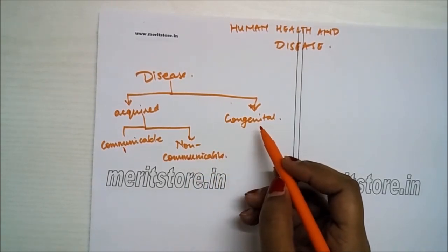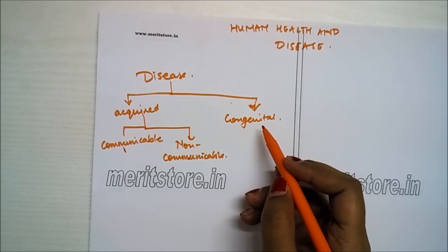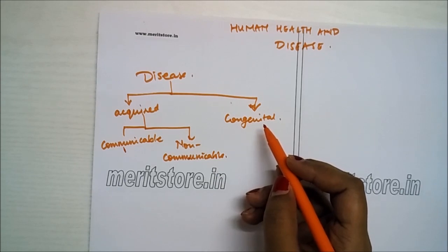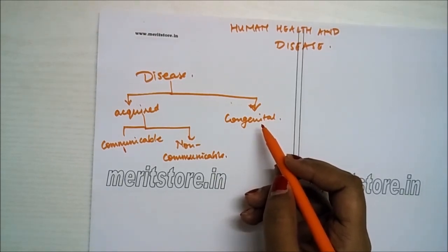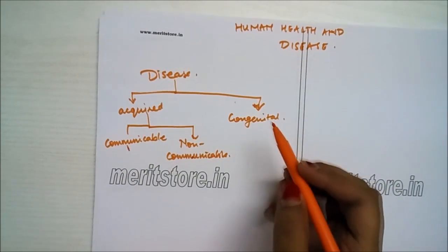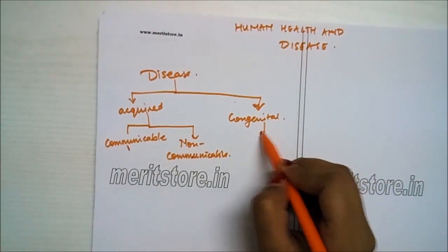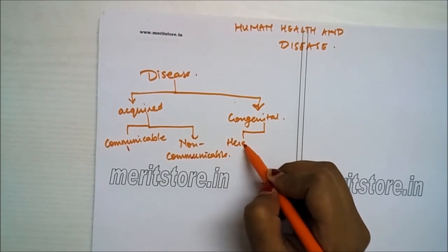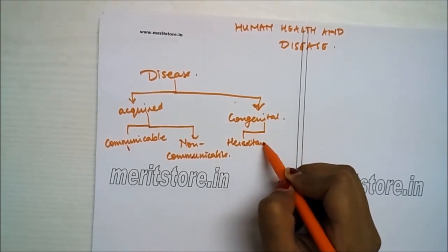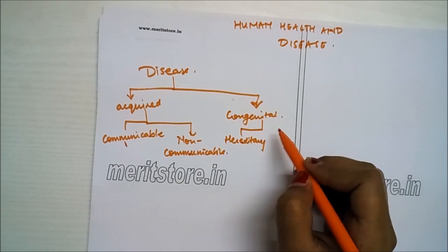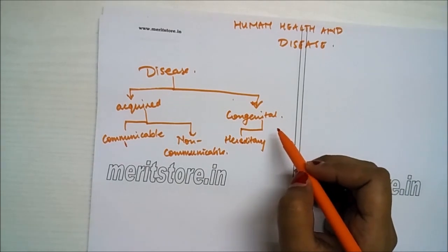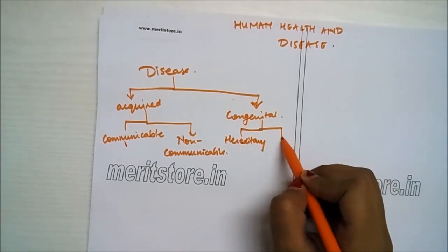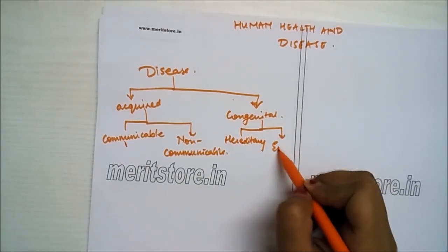Congenital diseases are diseases which a person has already contracted at birth. Congenital diseases can be of two basic types: hereditary or genetic diseases, and diseases due to environmental factors.